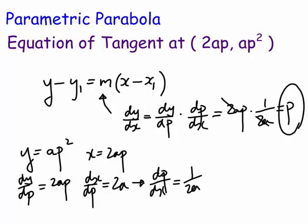Hallelujah — p is indeed the value of the gradient of the curve x² = 4ay at the general point (2ap, ap²). In other words, the parameter value p is actually the slope of the tangent at that point. The value of the parameter used to generate the point is also the slope at that point.